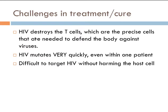HIV destroys T cells, which are the precise cells needed to defend the body against viruses. When you attack the immune system, that gives other diseases a chance to get a foothold, and it's those other diseases that actually kill the patient. The other problem with HIV is it mutates very quickly — even within one patient, HIV mutates as much as the flu virus does within a flu season. Targeting HIV is really difficult to do without harming the host cell, since HIV itself harms the host cell.